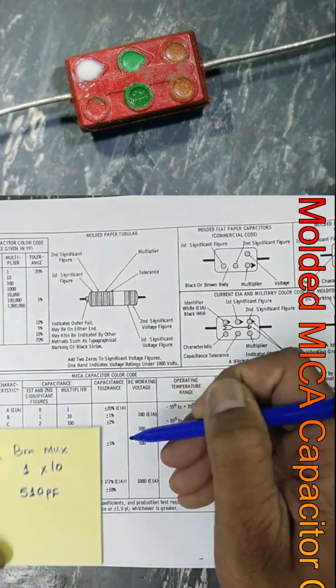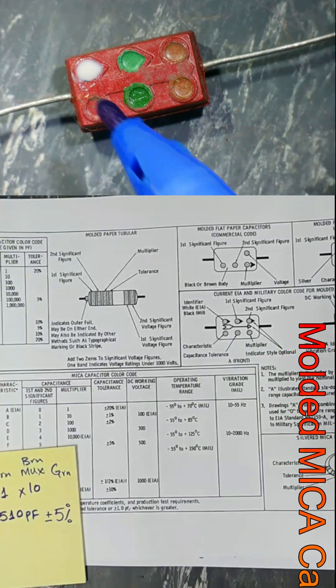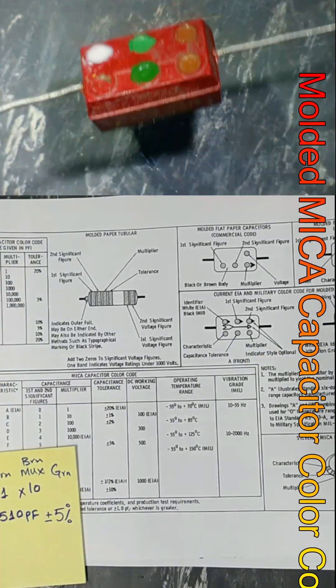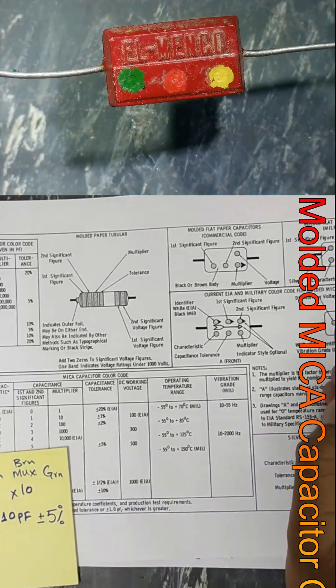The last characteristics band is empty. Then on the rear side, the voltage code indicates a DC working voltage of 500 volts DC.